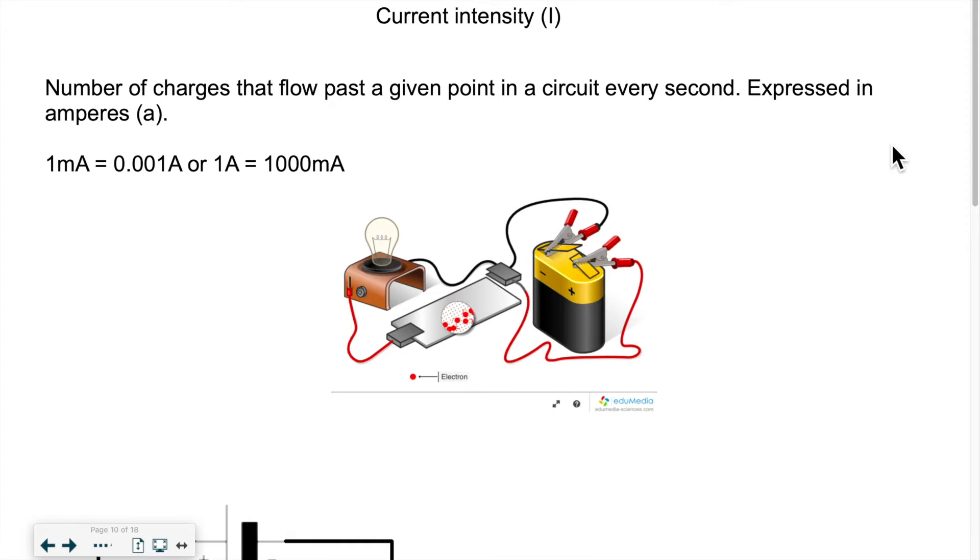and that represents the number of charges that flow past a given point in a circuit every second. If we could measure the amount of electrons that would pass within this point, for example, or it could be within the light bulb, it could be any point